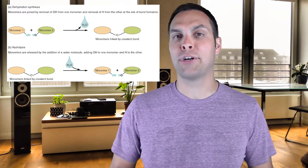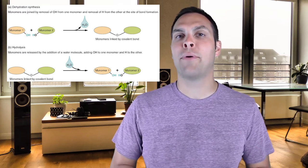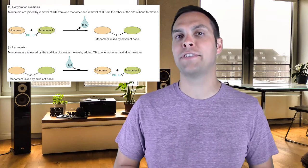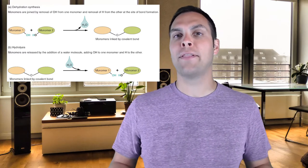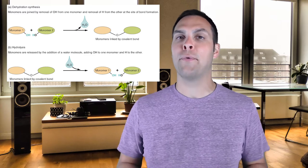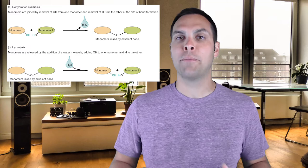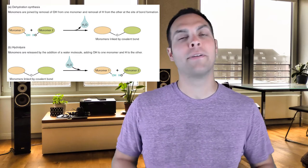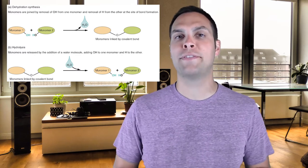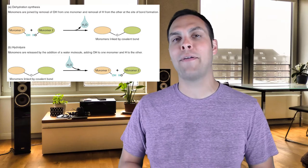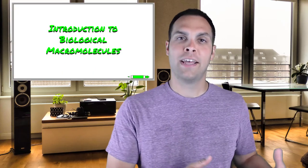When we break down a large carbohydrate, we do so through a process called hydrolysis. Dehydration synthesis creates large carbohydrates by removing water, while hydrolysis cuts them back into smaller pieces by replacing that water. This is something we talked about in a previous video in our introduction to biological macromolecules — if you haven't seen that video, go to the link provided.